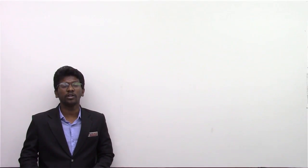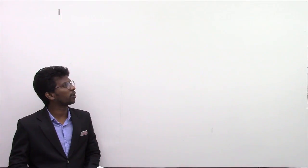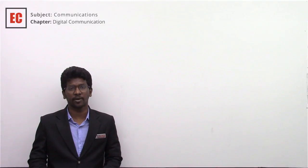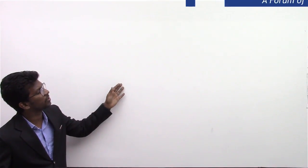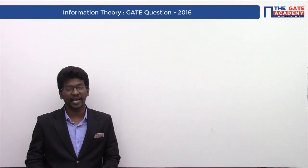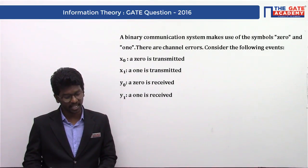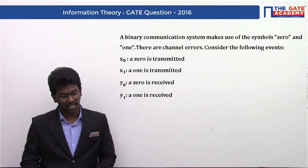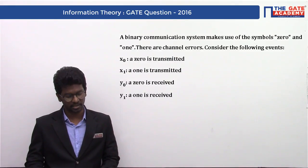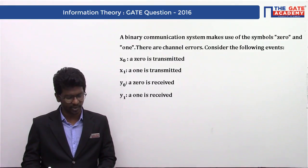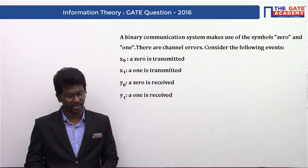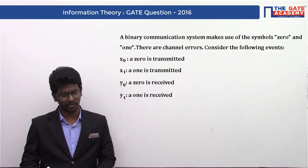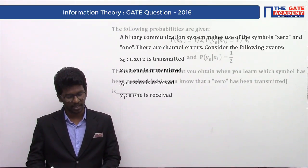Hello everyone, today we are going to solve a problem from the subject communication. This problem belongs to the topic information theory from the chapter digital communication. You can see the question on the screen. The question is given by a binary communication system that makes use of the symbols 0 and 1. There are channel errors. Consider the following events: x0 means 0 is transmitted, x1 means 1 is transmitted, y0 means 0 is received, y1 means 1 is received.